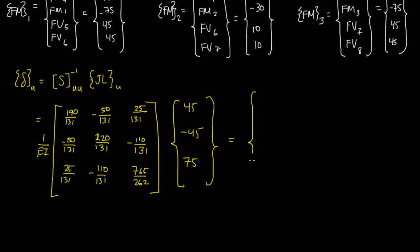12,675 over 131, negative 20,400 over 131, and then 69,525 over 262, and again, this is all multiplied by 1 over EI.